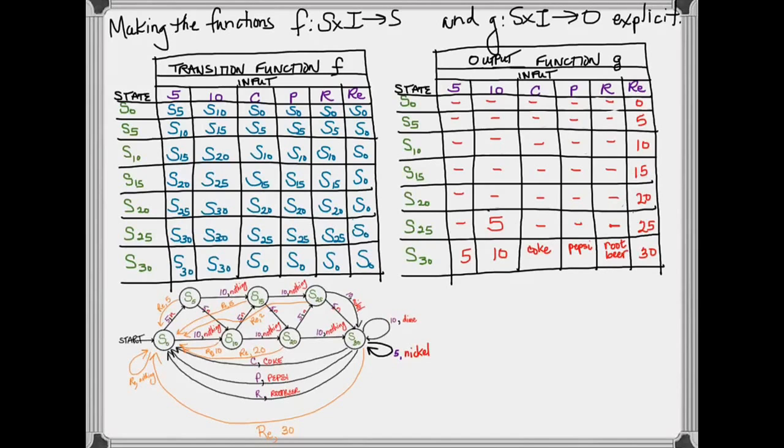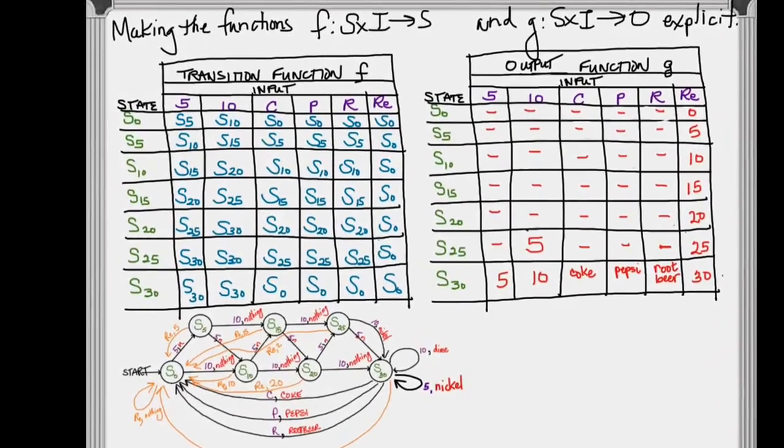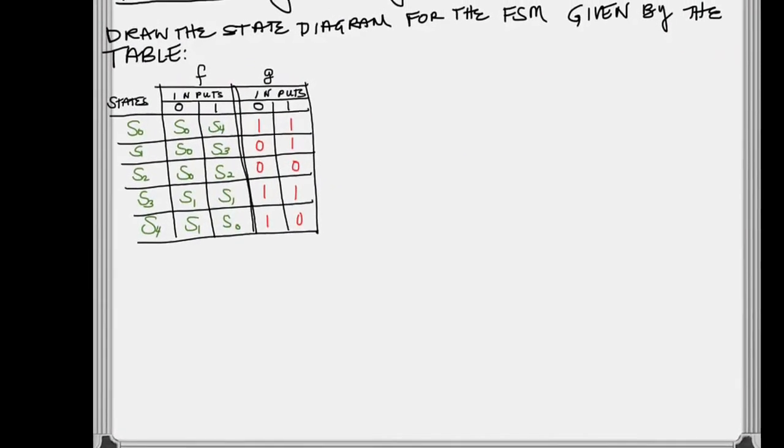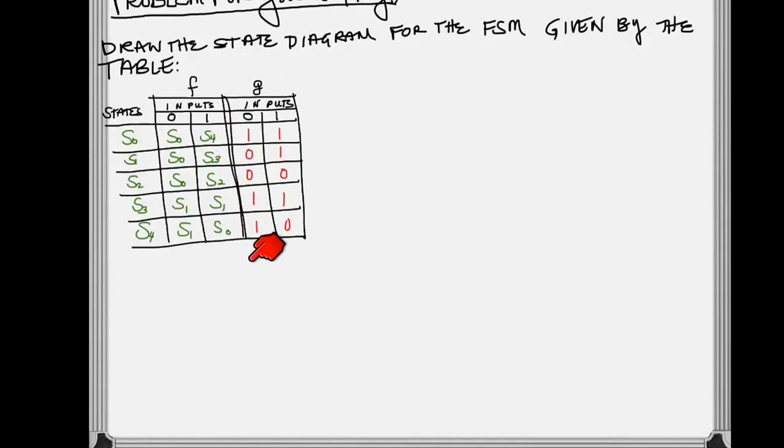The next thing I'd like to do is give you a problem to work on but working in reverse. What I'd like you to do is start with a table that has the transition function F and the output function G, and ask you to work backwards and create the state diagram for it. So pause here.